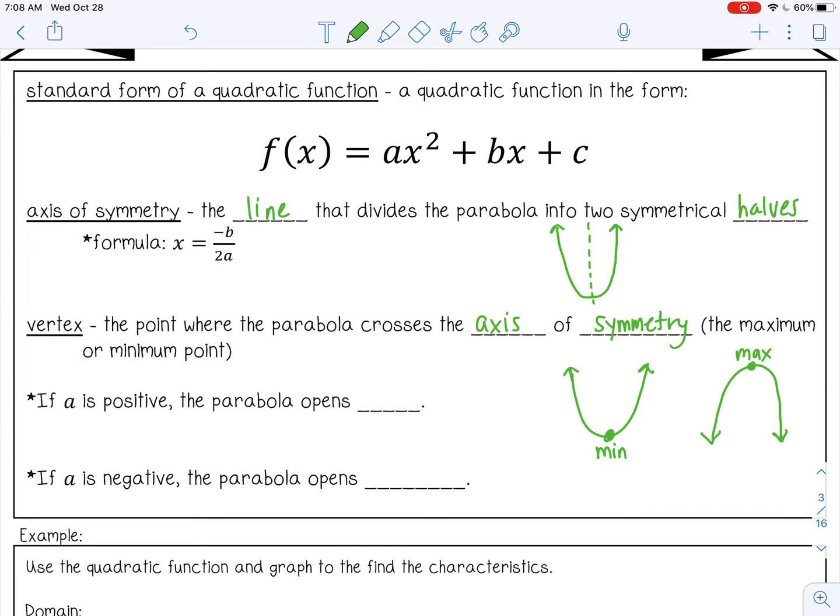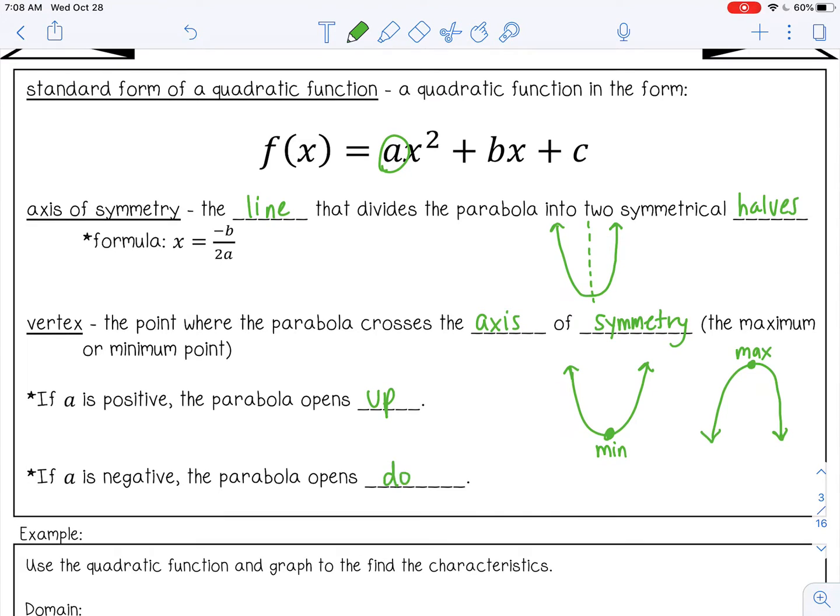If a is positive, if your a value is positive, the parabola is going to open up. And if a is negative, the parabola is going to open down.